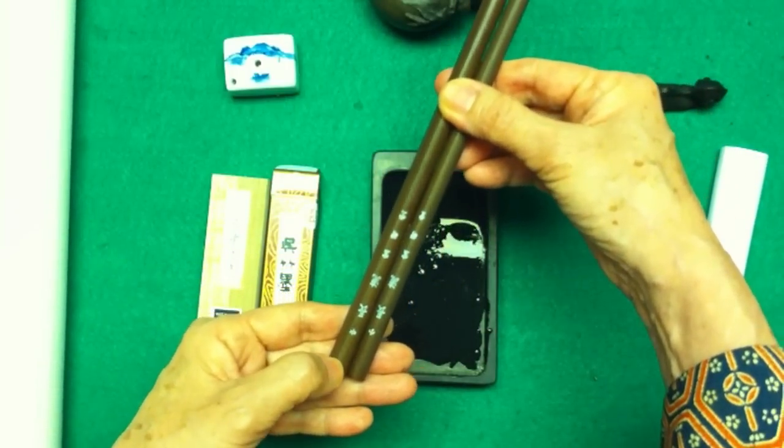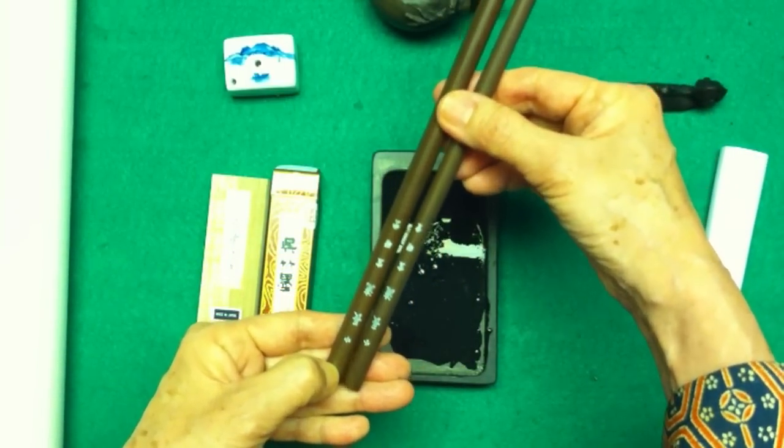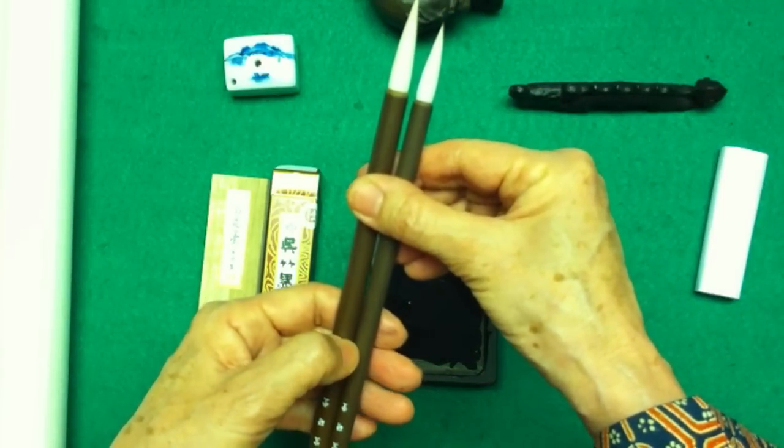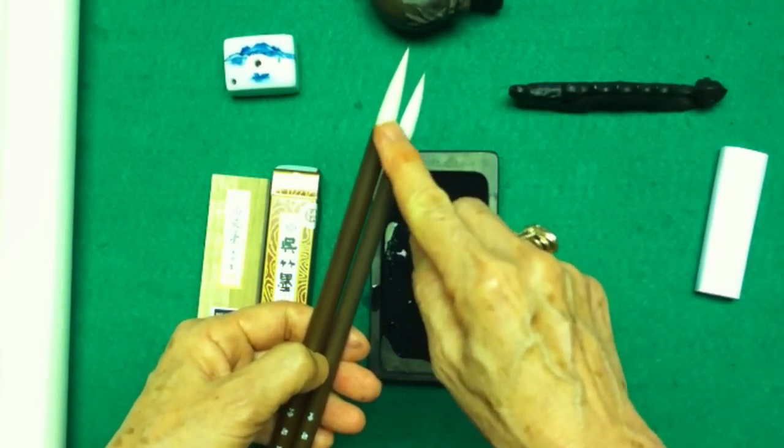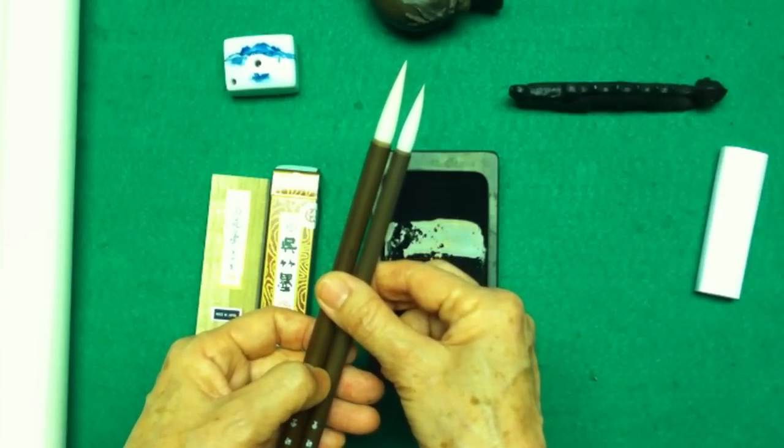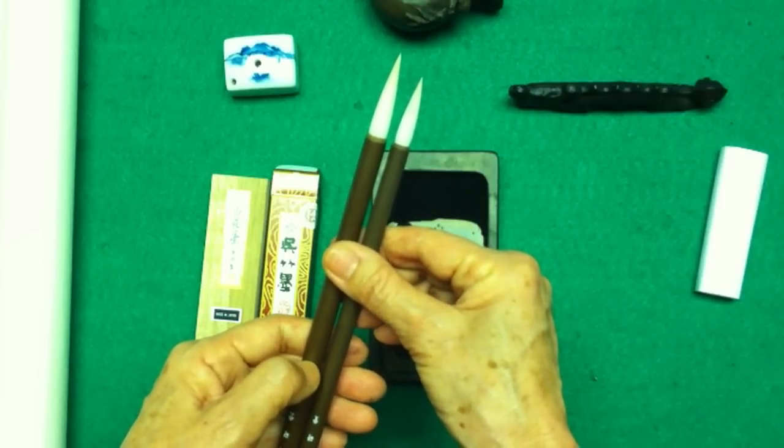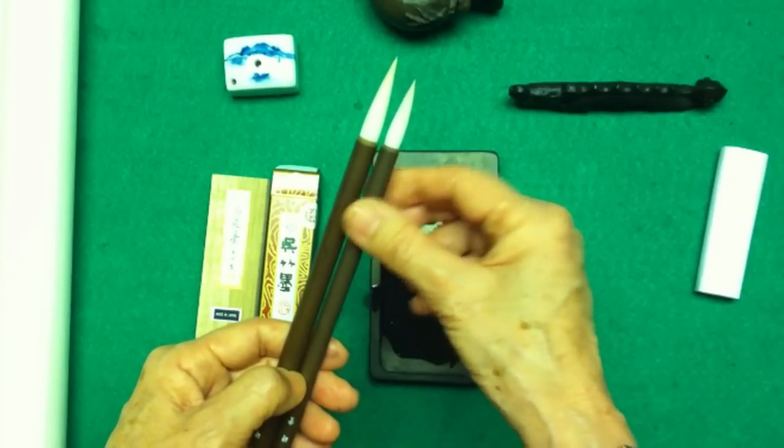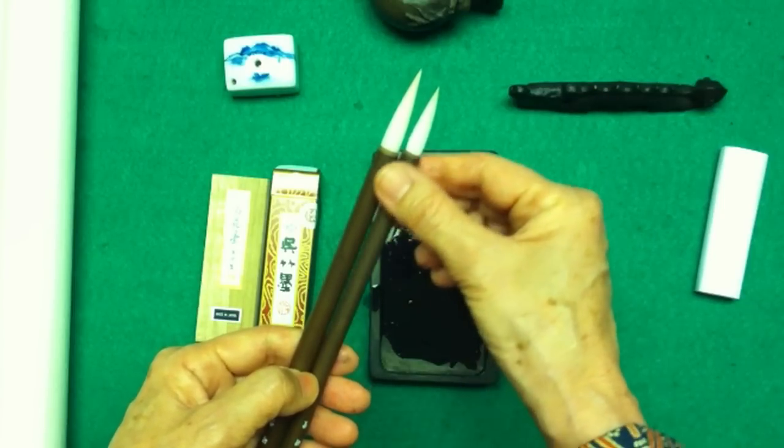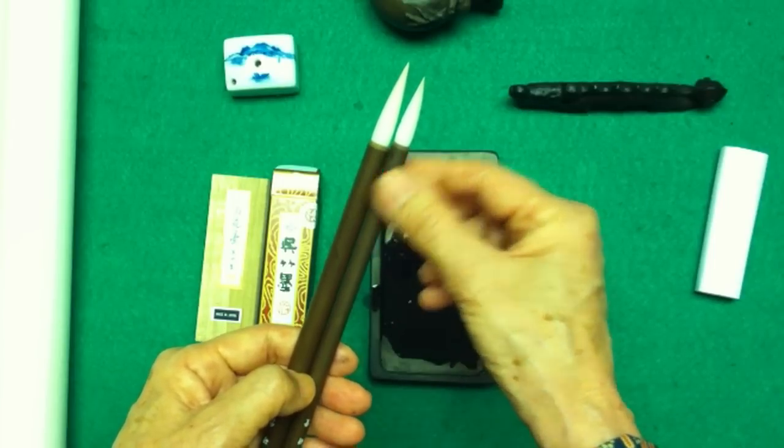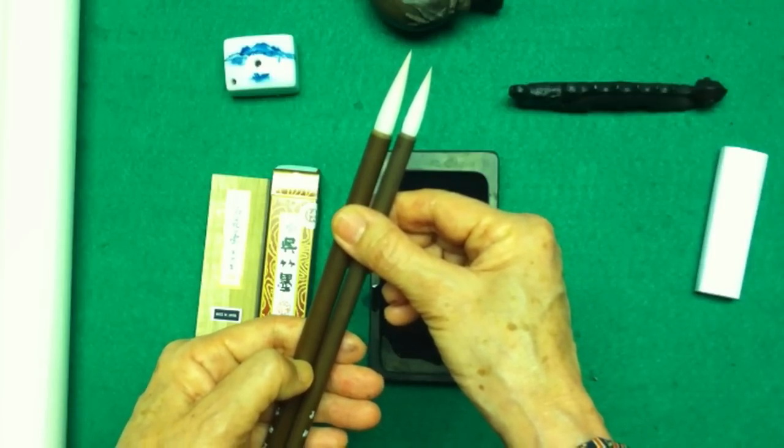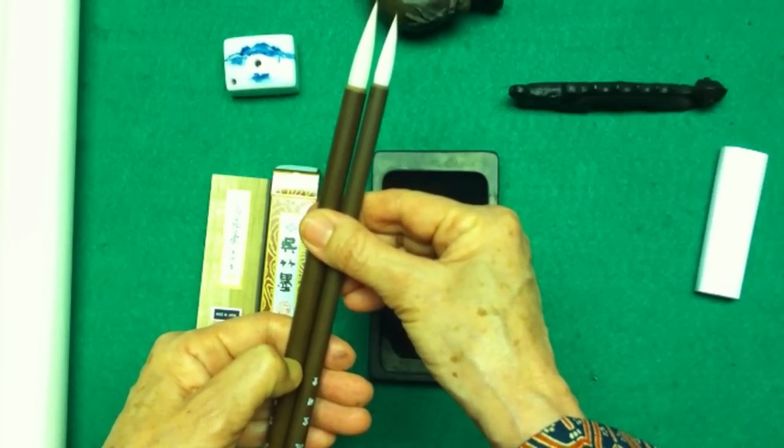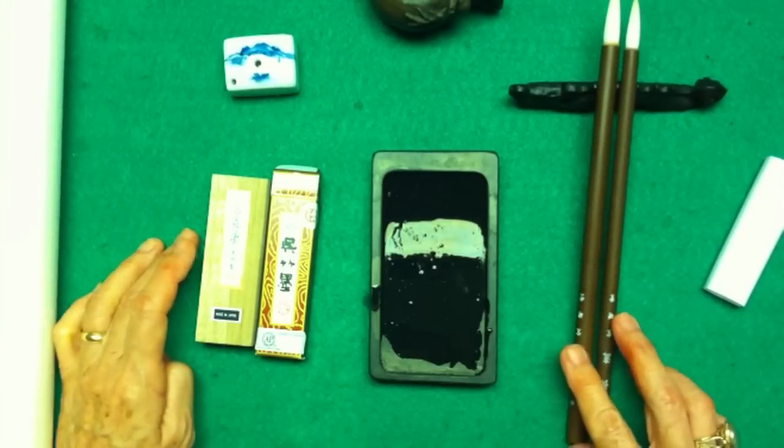My brushes are usually this type, the Choryu brush. We carry medium and small. They are excellent for calligraphy and paintings. It has two types of hair in this brush area. The white one is sheep, and inside is horse hair. I cannot show you inside until I melt this glue in water, but the inside has horse hair, which gives it a little more bounce and stability.